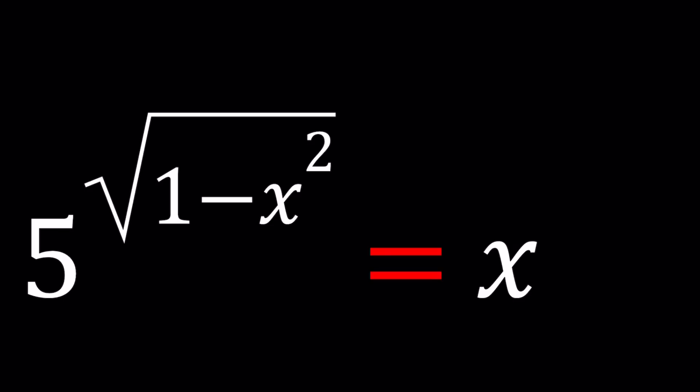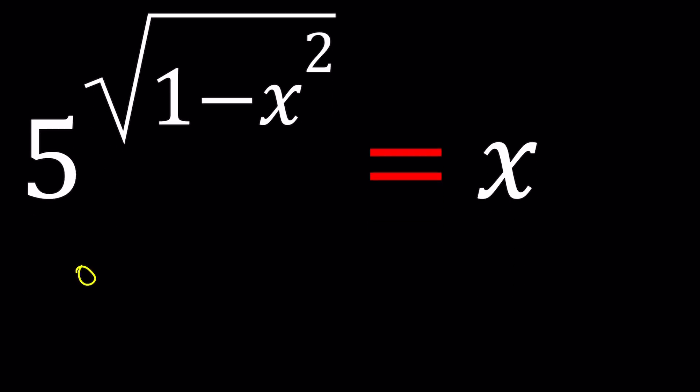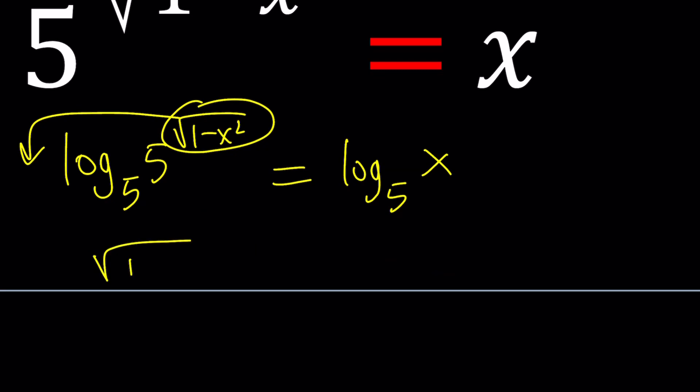5 to the power of the square root of 1 minus x squared equals x, and we're going to be solving for x values. So basically the original problem can be obtained by logging both sides with base 5. If we do that, we get something like this. And obviously this can be moved to the front by properties of logarithms. And this gives us the problem from roughly 3 years ago.